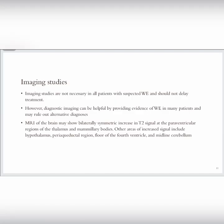Imaging studies can also be done for detecting Wernicke encephalopathy, but they are not necessarily required because they will delay treatment. However, diagnostic imaging is helpful to provide evidence and may rule out alternative diagnoses. MRI of the brain may show bilaterally symmetric increase in T2 signal at the paraventricular regions of the thalamus and mammillary bodies. Other areas of increased signal include hypothalamus, periaqueductal region, floor of the fourth ventricle, and midline cerebellum.